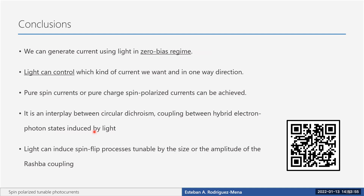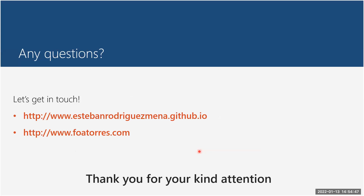To wrap up: we can generate photo currents in the zero-bias regime by hybridization with the continuum. Circularly polarized light controls the direction and spin character of the current through circular dichroism. Linear polarization produces a pure spin current while circular polarization produces a spin-polarized charge current. Light can also induce spin-flip processes — enabled by Rashba coupling — where the oscillation wavelength scales linearly with Rashba strength, allowing device design on demand.